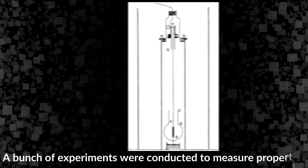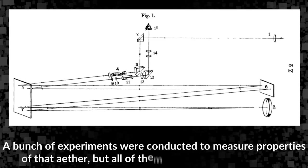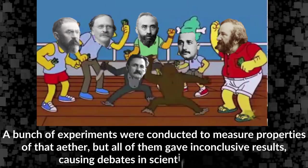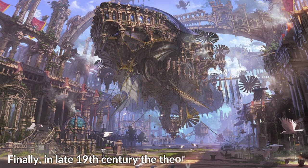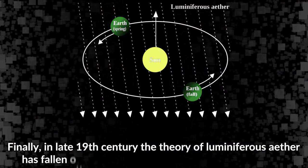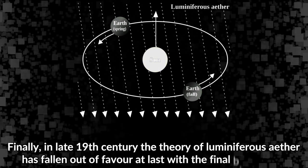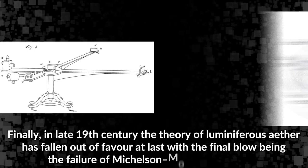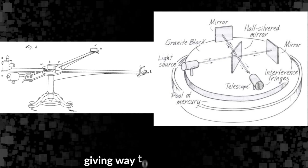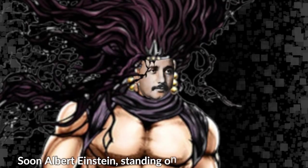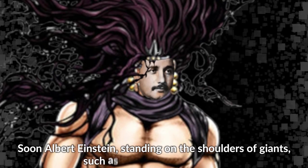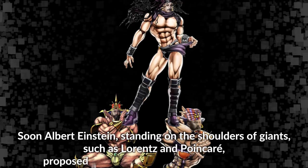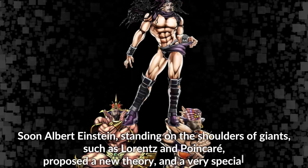A bunch of experiments were conducted to measure properties of that ether, but all of them gave inconclusive results causing debates in scientific community. Finally in late 19th century the theory of luminiferous ether has fallen out of favor, at last with the final blow being the failure of Michelson-Morley experiment, giving way to new bold ideas. Soon Albert Einstein, standing on the shoulders of giants such as Lorentz and Poincaré, proposed a new theory, and a very special one.